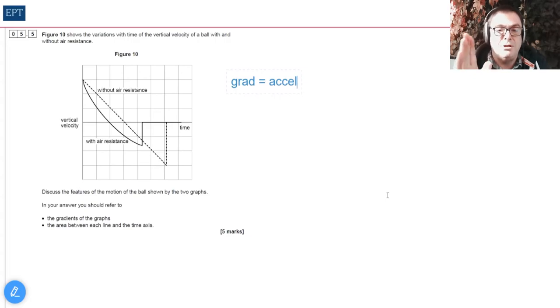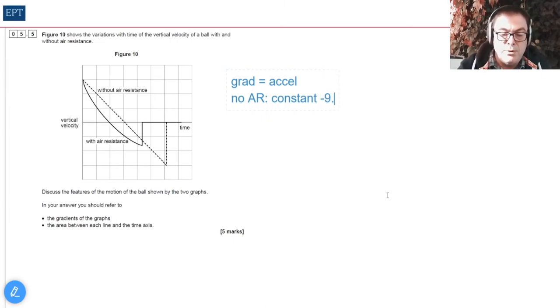We know we're going to have to think about things like g and the weight—forces up and down. If the gradient is acceleration, let's deal first with the dotted line. Without air resistance, this is a constant gradient, which is understandable because there's only one force acting here, and the value of this acceleration is -9.8 m/s². It's negative because the gradient's negative, which implies that upwards is the positive direction.